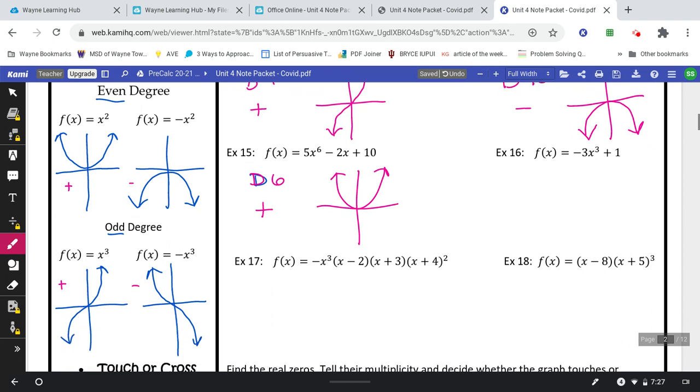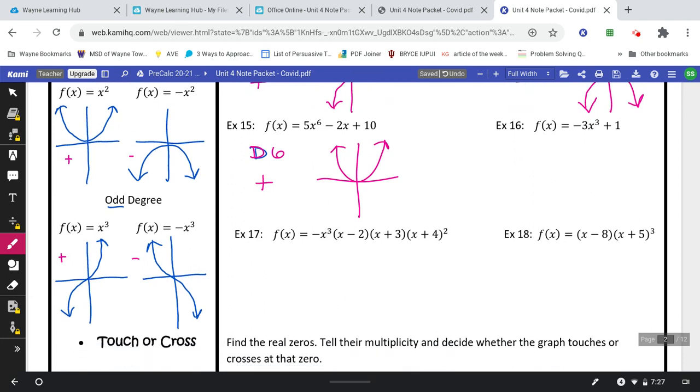I'm going to do 17 with you and then let you try 16 and 18. So 17 is in factored form, so you have to add the exponents. I have three, four, five, and then six, seven from the two. So three, one, one, and two. That would make a degree seven.